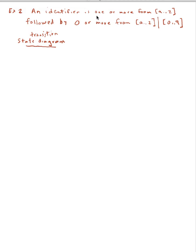An identifier in this example is defined as one or more characters from the set a to z (I'm just doing the lowercase a to z for simplification) followed by zero or more characters from either that set of letters or the set of digits. So that's what makes an identifier.